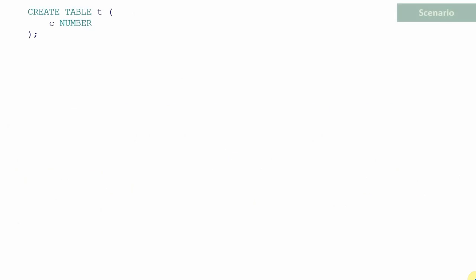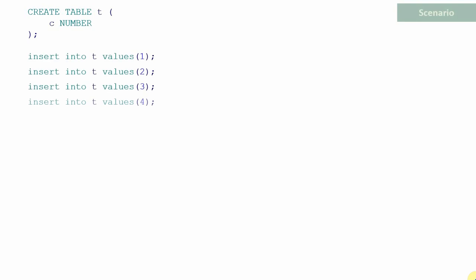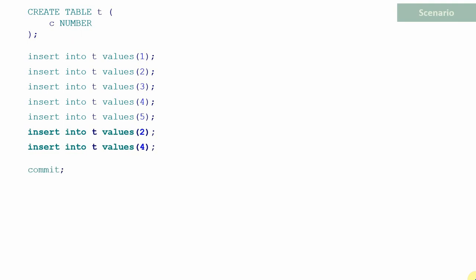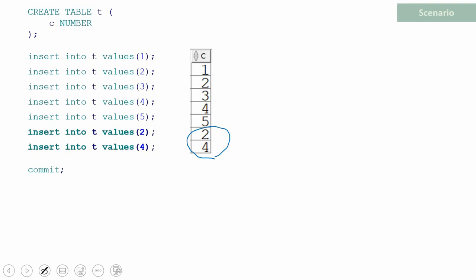Let us start with a simple scenario. I am creating a table called T with one column C of number data type. Then I am populating values 1, 2, 3, 4, and 5. Then I am also populating 2 and 4 again and committing the records. So at this point, the table contains 7 values: 1, 2, 3, 4, 5, 2, and 4. I have intentionally populated 2 and 4 twice so that we have duplicate values in this table.